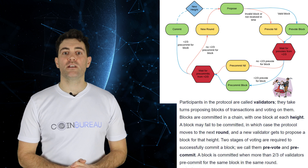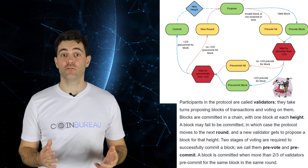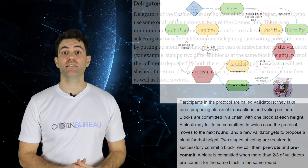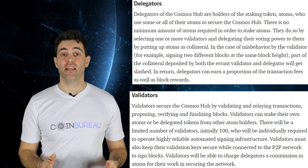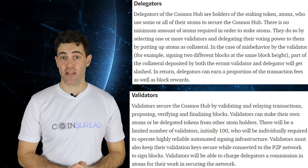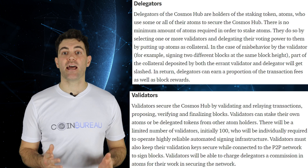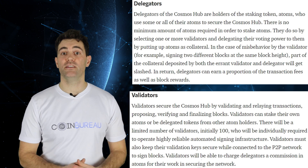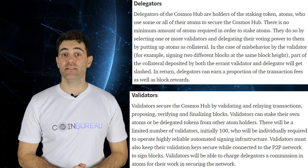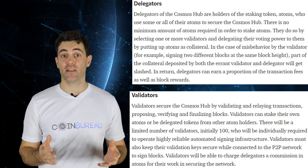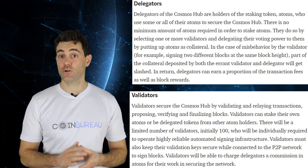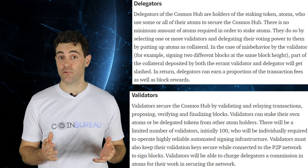Tendermint BFT organizes network participants into delegators and validators. Delegators determine which validators take part in consensus, while validators confirm transactions as they add blocks to the Cosmos network. Delegators and validators receive rewards in the form of tokens. Interestingly, Cosmos has designed its network so that any cryptocurrency within the Cosmos ecosystem could potentially be used as a reward.